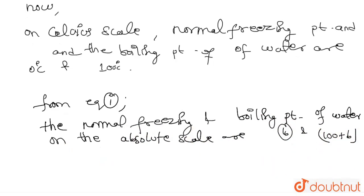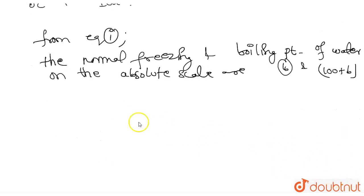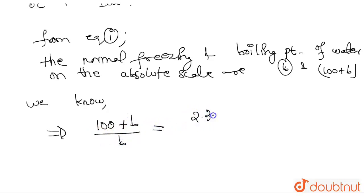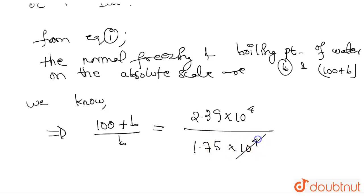Now, we know the ratio of temperature on the absolute scale — what is the ratio of temperature on the absolute scale? That is (100 + B) divided by B. So, this will be equals to 2.39 × 10^4 divided by 1.75 × 10^4.